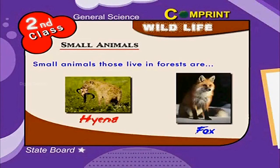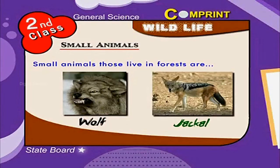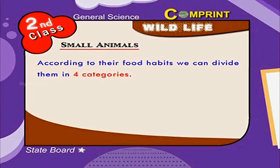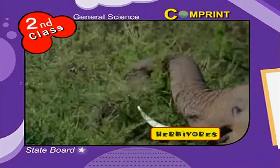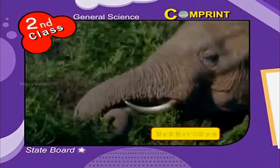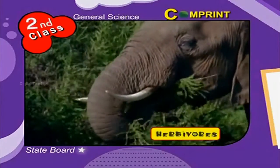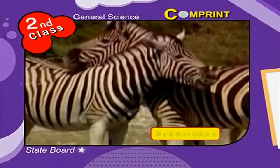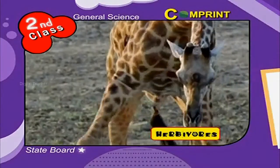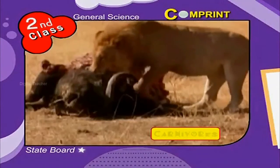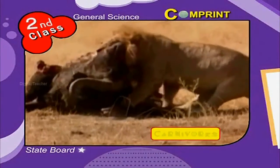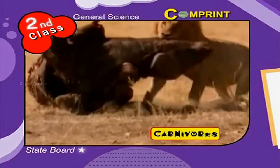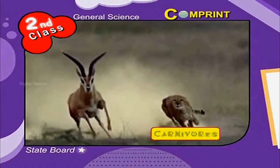Small animals that live in forests are fox, hyena, wolf, and jackal. According to their food habits, we can divide them into four categories. Herbivores are those that eat only grass, leaves, and plants — for example, elephant, zebra, deer, and giraffe. Carnivores are those that kill animals and eat their flesh, like lion, tiger, and cheetah.